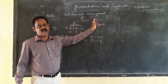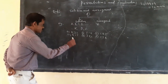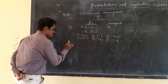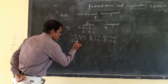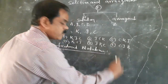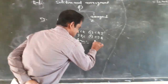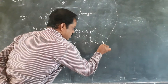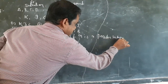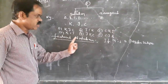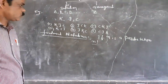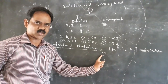Now you understand the definition of permutation — permutation means selection and arrangement. Next, we have to discuss factorial notation. The next concept is factorial notation. If small n is a positive integer, then the factorial notation is denoted as n factorial.